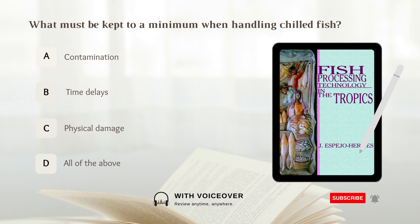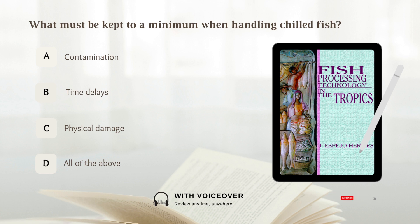What must be kept to a minimum when handling chilled fish? Options: A. Contamination. B. Time delays. C. Physical damage. D. All of the above. Answer: D. All of the above.